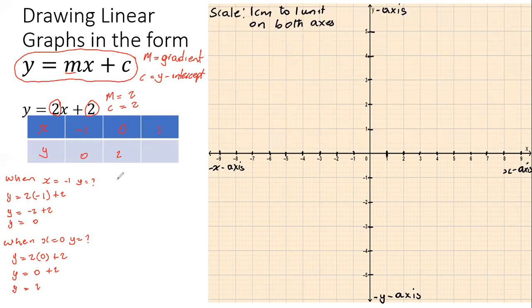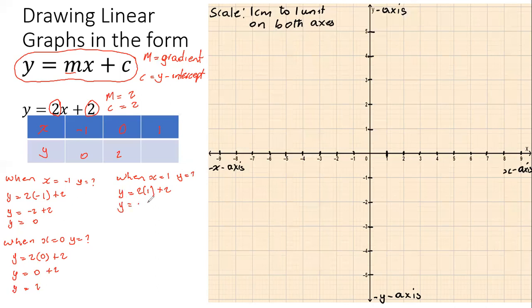When x equals one, we get y = 2 × 1 + 2. Two times one is two, and two plus two gives us four. So when x = 1, the corresponding y value is four.